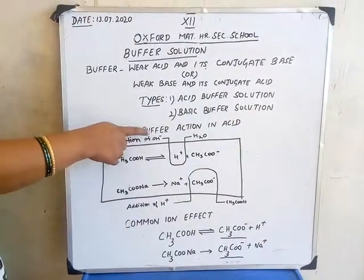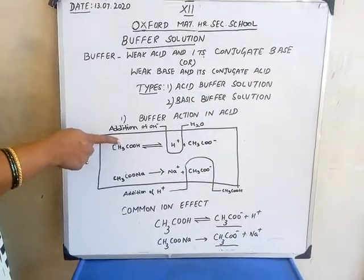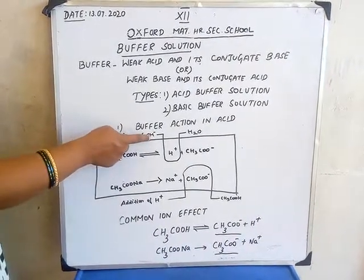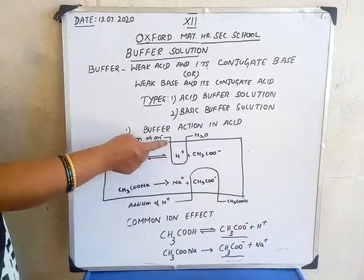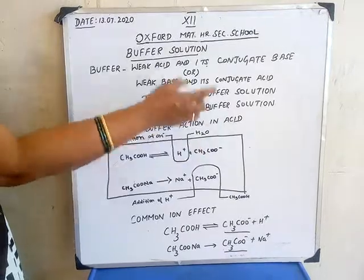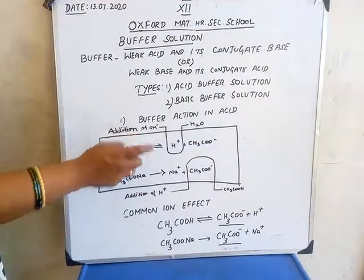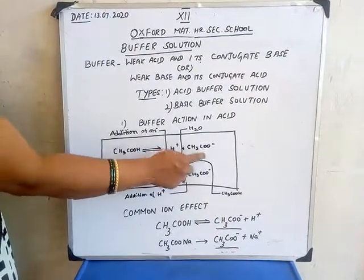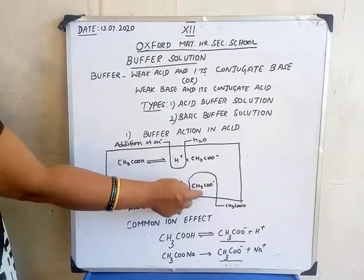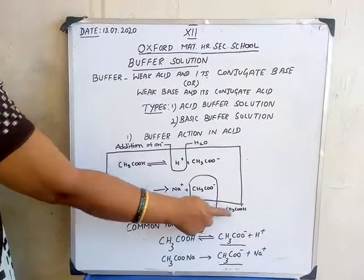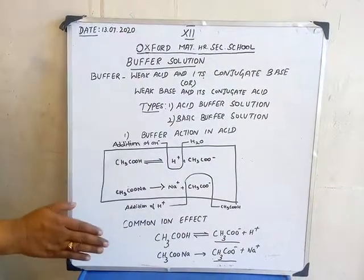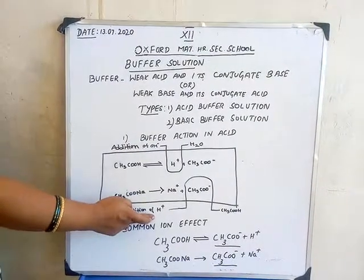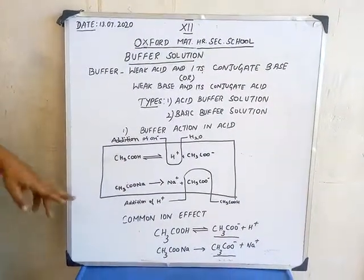Now I am going to explain how this buffer action takes place in acid buffer. When we are adding base, it will react with the H⁺ so that it forms water, thus nullifying the effect of the base. Same manner, when we are adding acid to this buffer solution, the H⁺ from the acid will react with the acetate ion so that it forms weak acid, nullifying the acid concentration. Likewise, it is balancing on the addition of both base as well as acid.